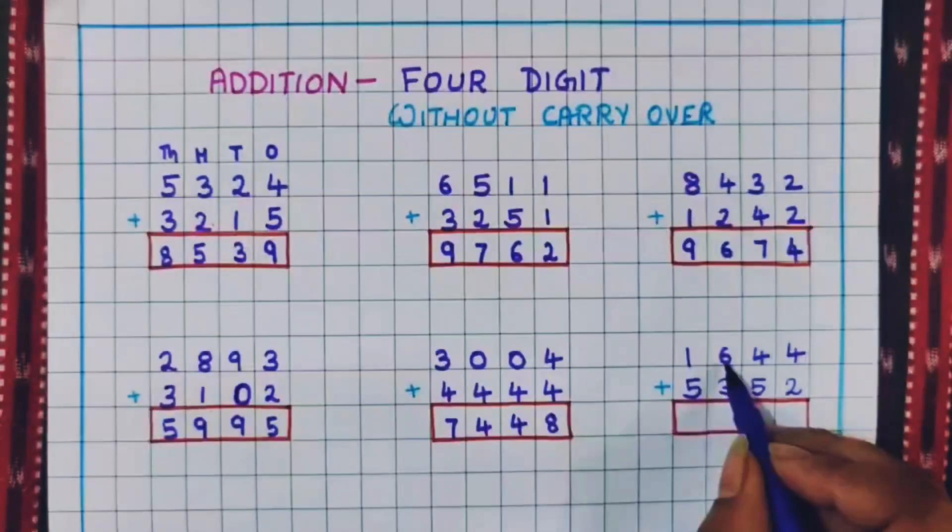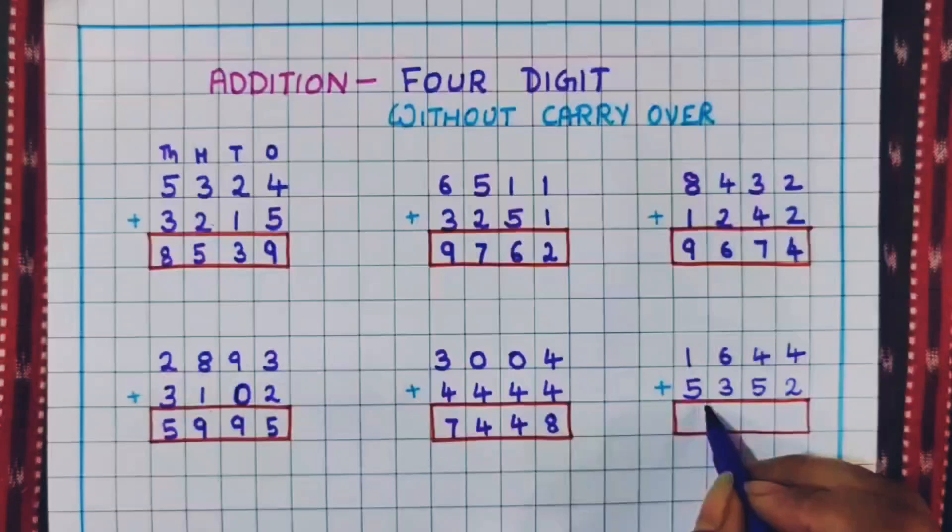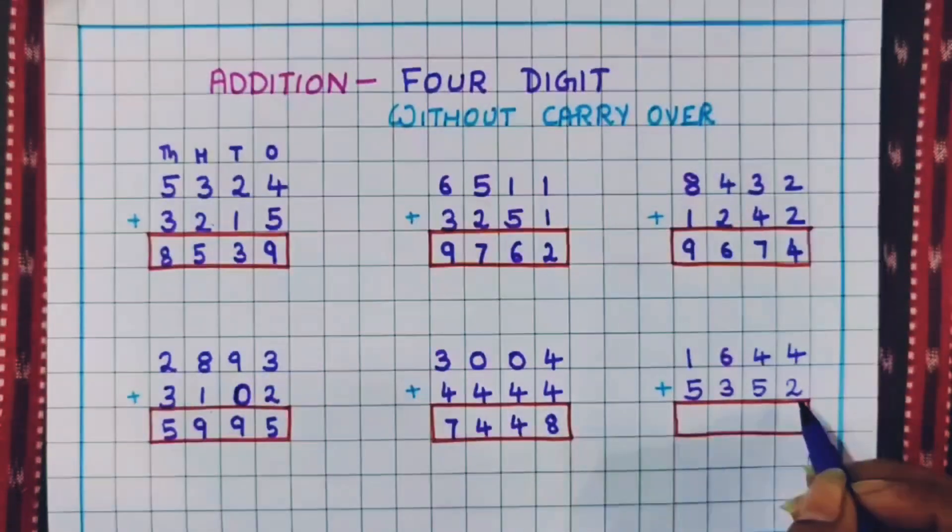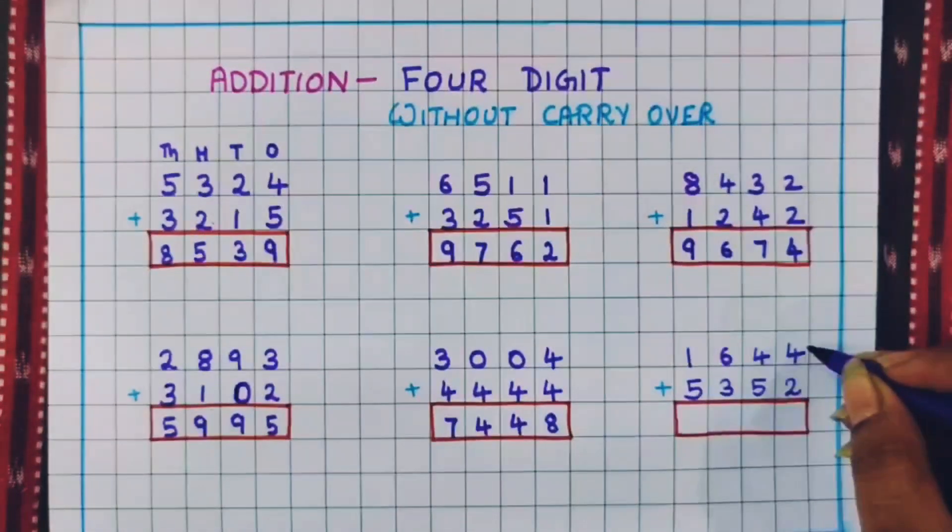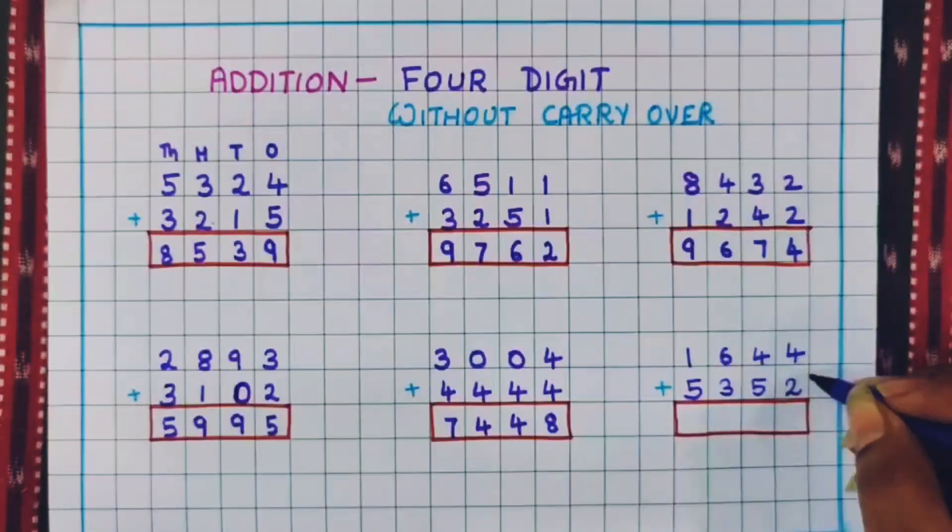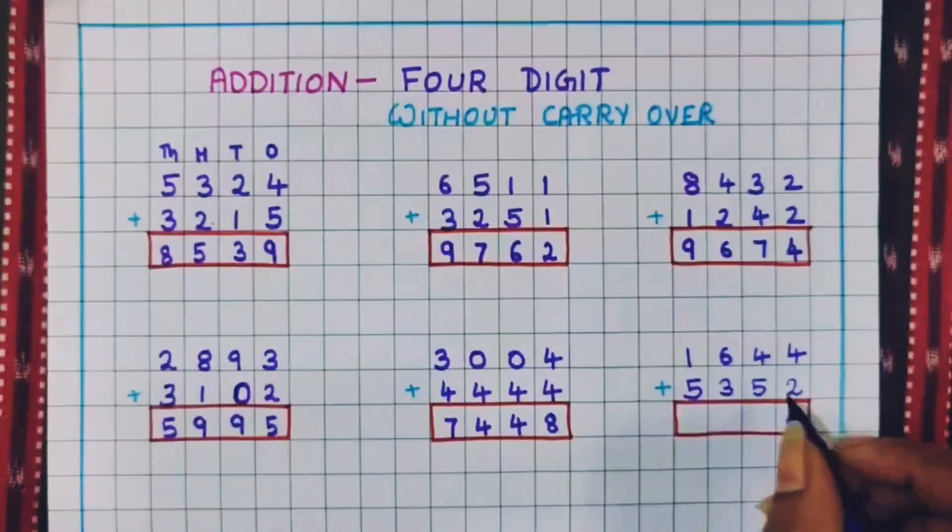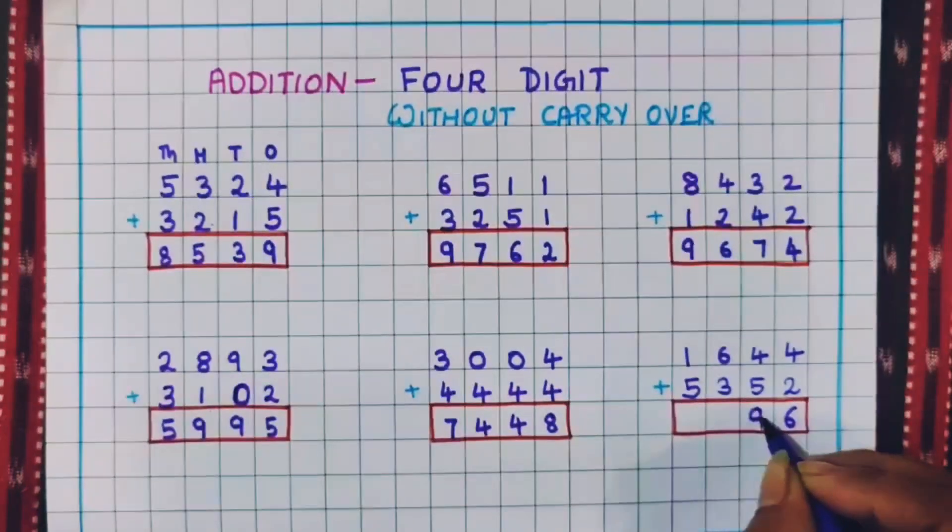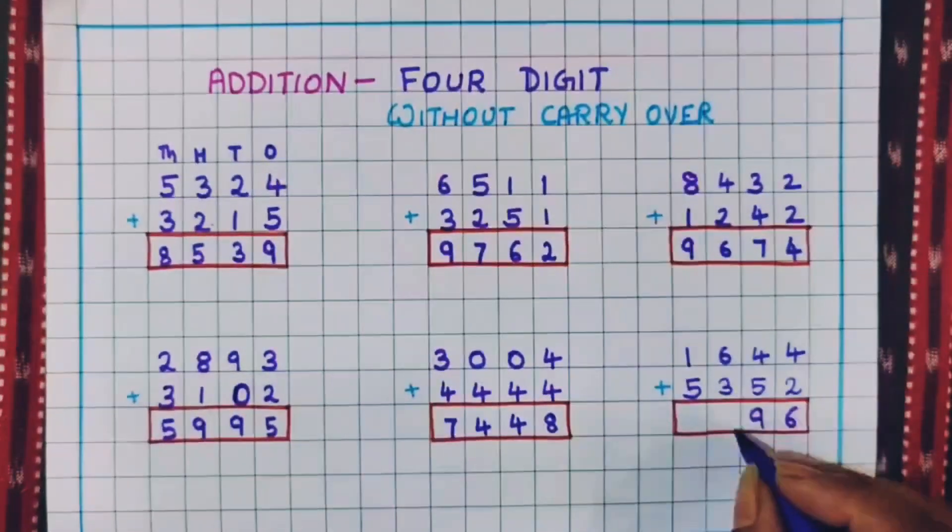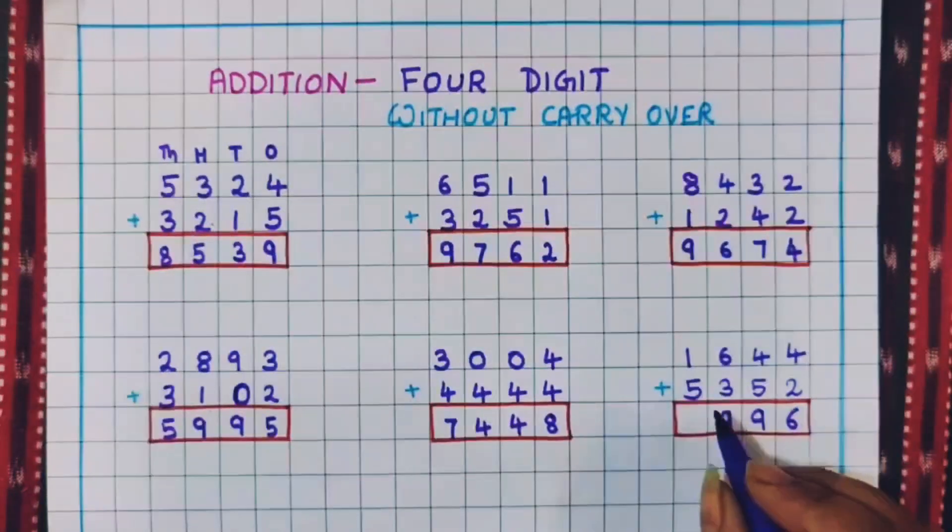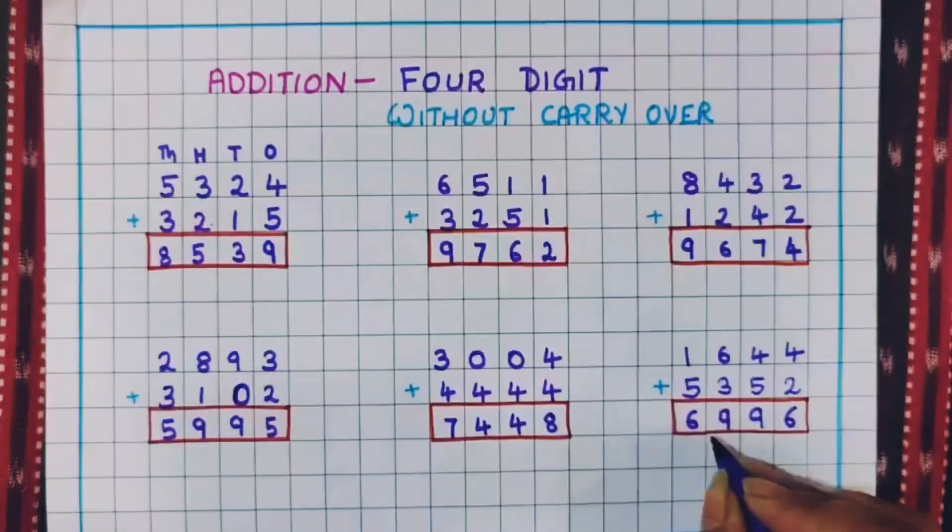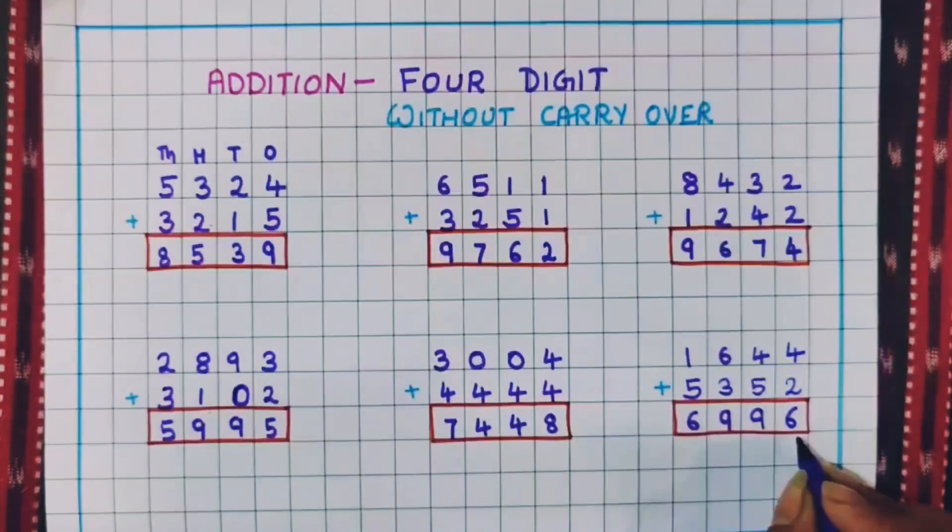Next 1644 plus 5352. Now first we will do the addition of ones place. 4 plus 2 is 6. 4 plus 5 is 9. 6 plus 3 is 9 again and 1 plus 5 is 6. So the answer is 6,996.